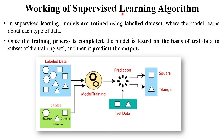Now let's look at the working of the supervised learning algorithm. In supervised learning, models are trained using labeled data, where the model learns about each type of data. The label data includes images and their labels — for example, hexagon with label 'hexagon', square with label 'square', triangle with label 'triangle'. We pass this labeled data to the machine for training, and the machine learns the features, structure, and characteristics of each image. After that, using the testing data set, we test whether the machine has been properly trained.